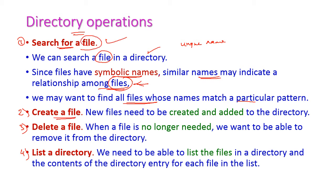Next is creating a file: a new file is created and added into the directory. We can also delete a file — if we don't need a particular file, we can easily remove it from the directory. And list a directory will list all the files available in the directory as well as any subdirectories.